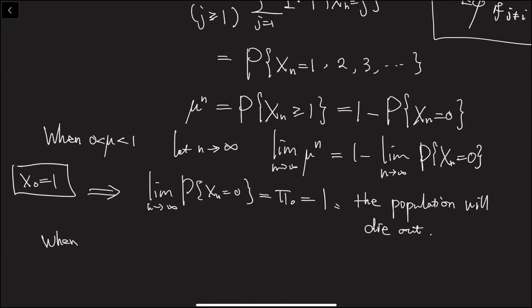When μ equals 1, this is the critical case. We'll skip the derivation because it requires much more advanced knowledge than the scope of this class, but the conclusion is that the population still dies out.